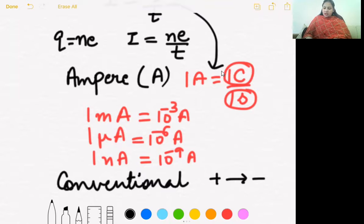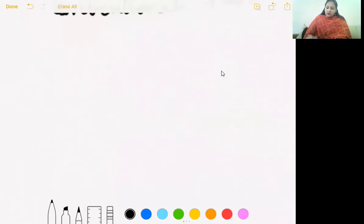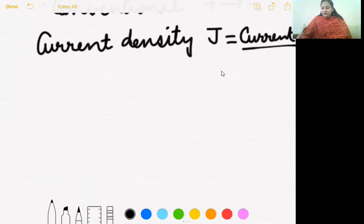This is some basic about current. Now we have few definitions that are new to you. Current density is denoted by symbol J and it is defined as current per unit area. So current density is current per unit area, its formula becomes J equals I upon A.